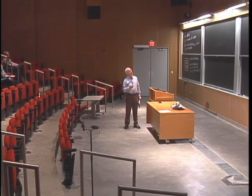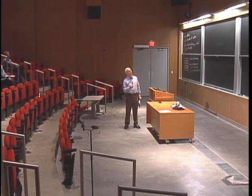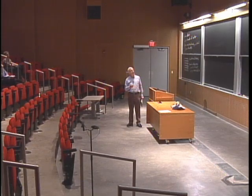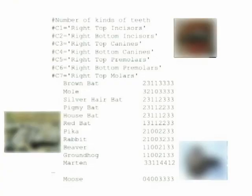What I've got here is the number of different kinds of teeth — the right top incisors, the right bottom incisors, the molars, premolars, et cetera. And then for each animal, I have the number of each kind of tooth. I don't know very much about teeth, but I've got that database, and now I want to try and see what happens when I cluster them.